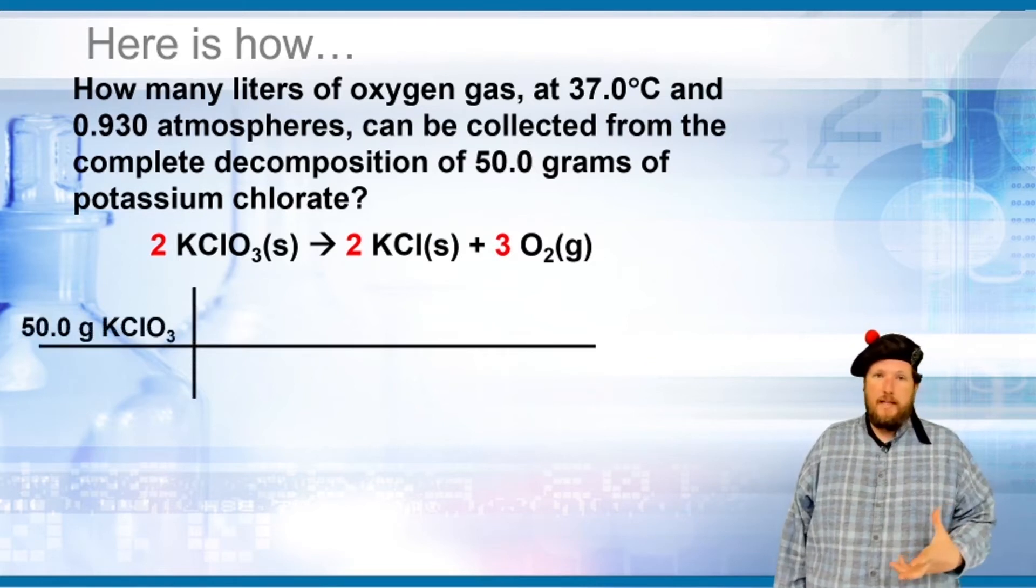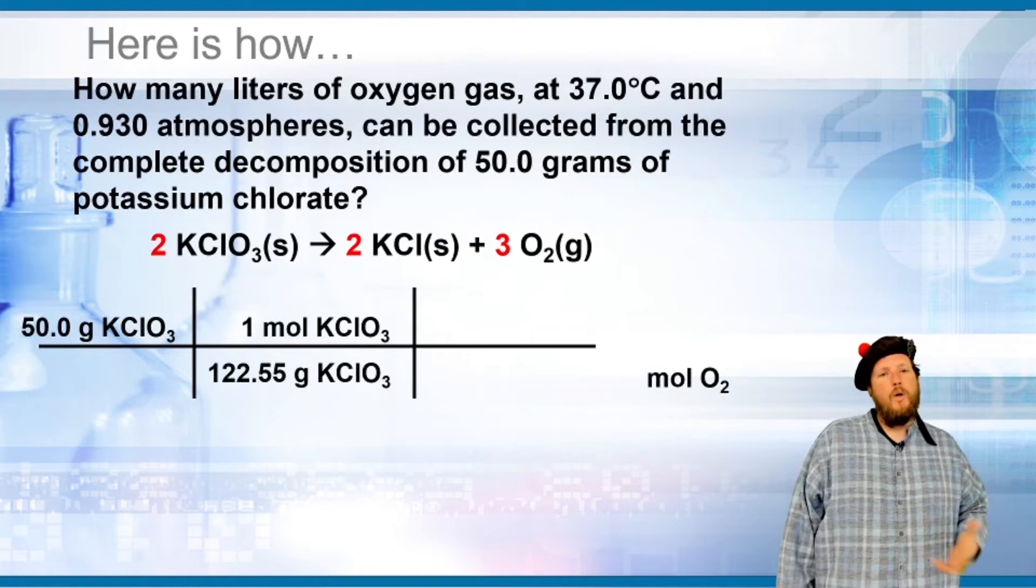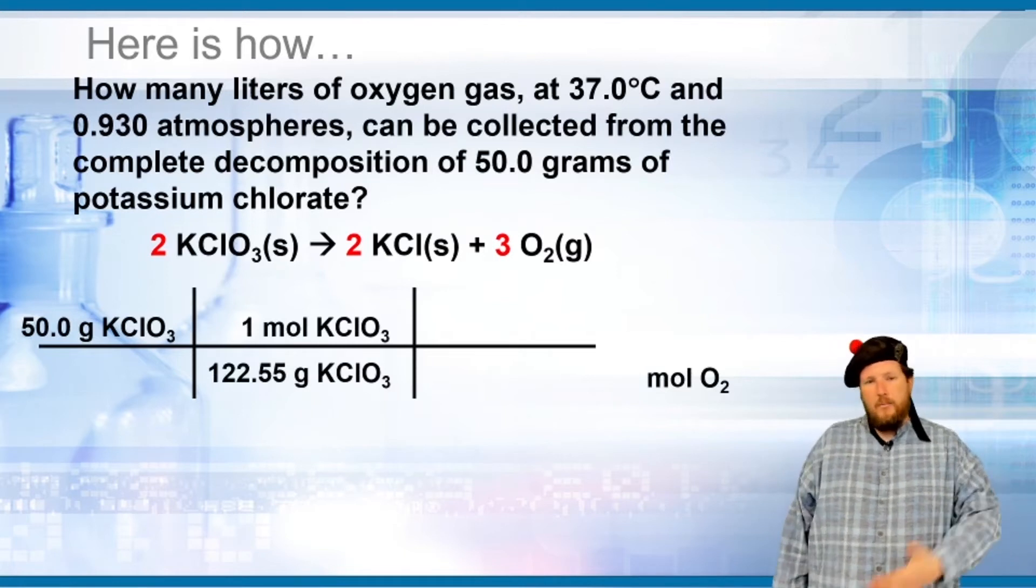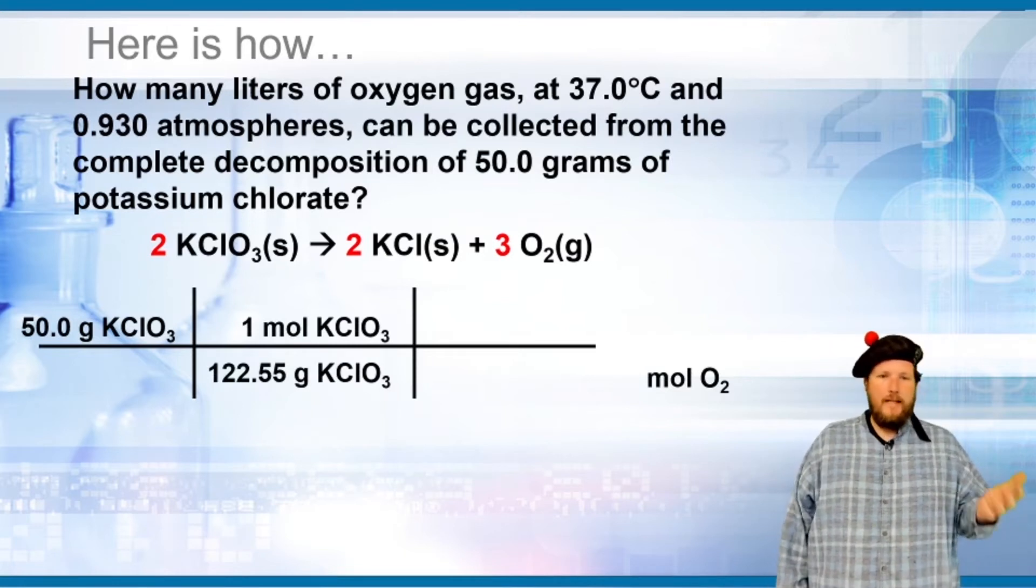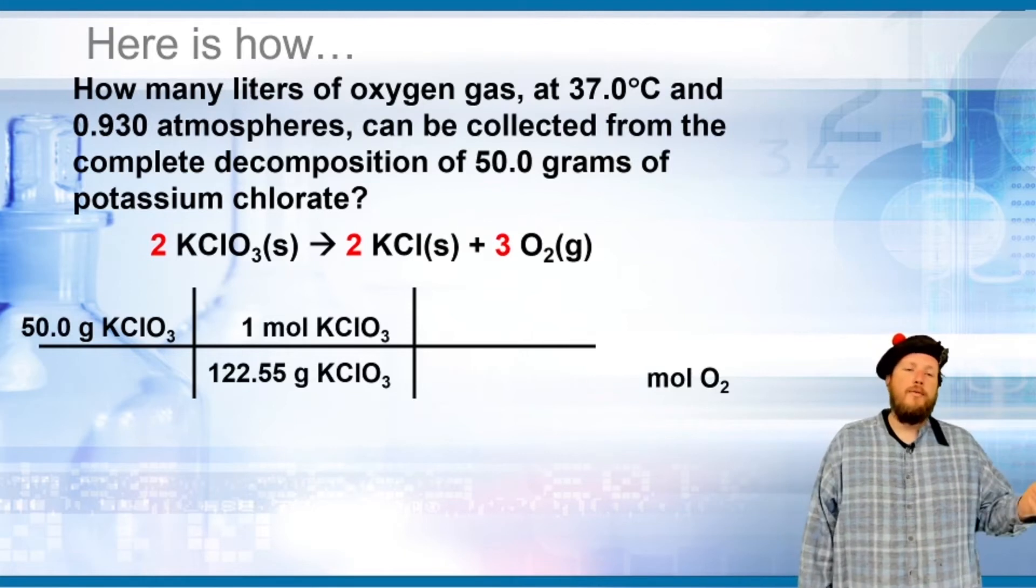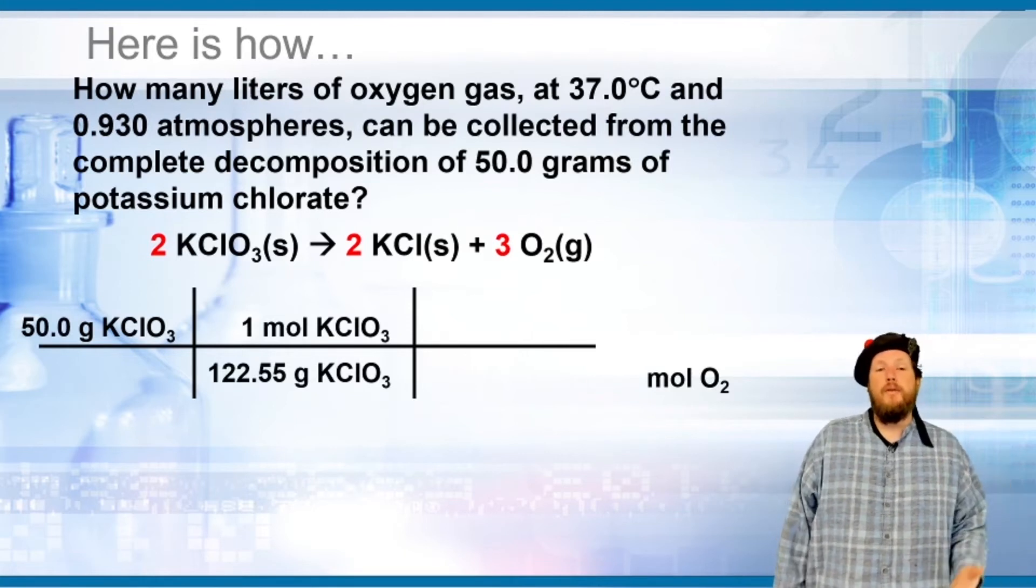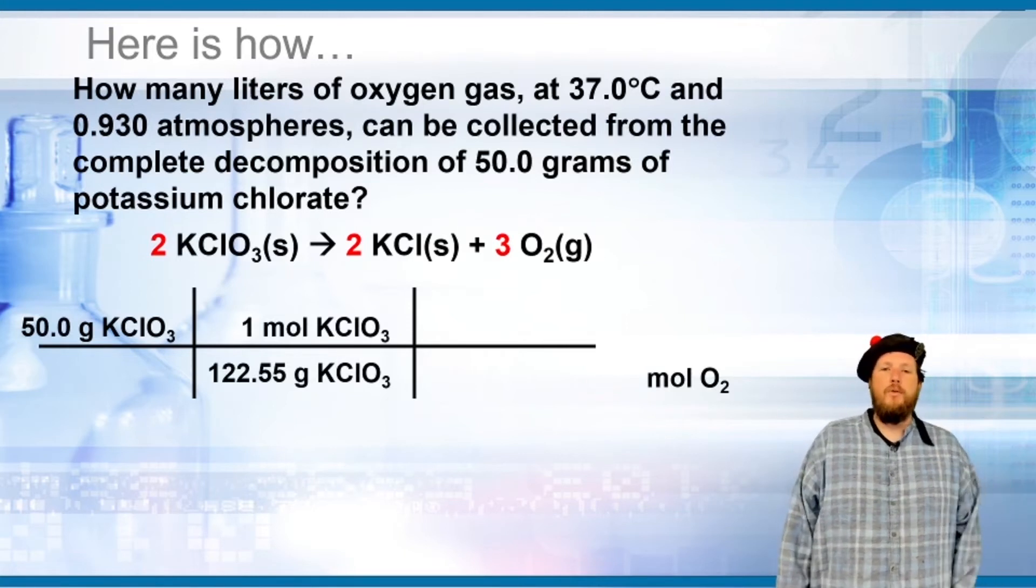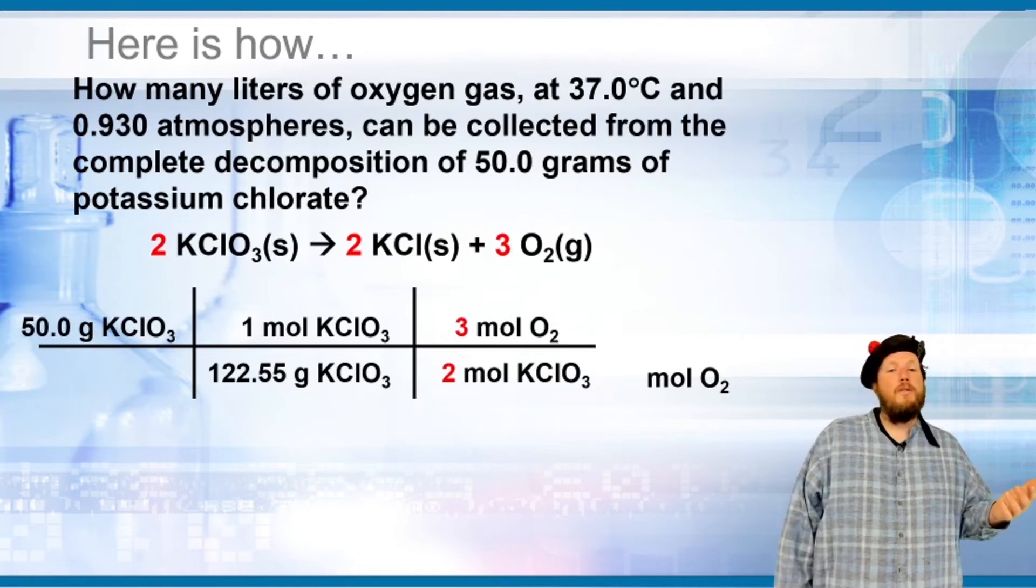We start with 50 grams of KClO₃ and divide by the molar mass. The molar mass of KClO₃ from the periodic table is 122.55 grams per mole, which gives us moles of KClO₃.